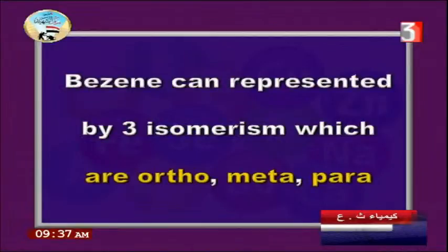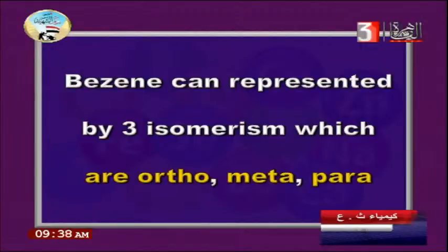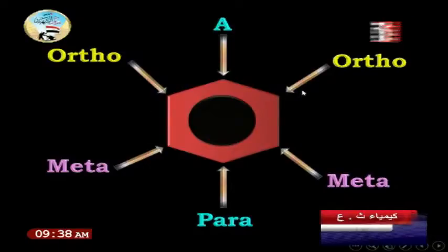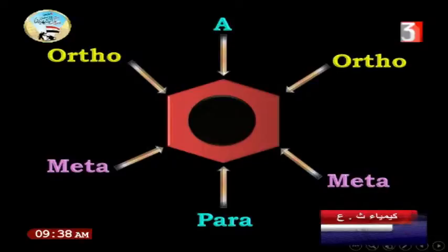Benzene can be represented by three isomers: ortho, meta, and para — different shapes. How do you differentiate between them? Looking at the benzene ring, ortho position means the two carbons on the left and right of the main substituent. Meta position is the next two carbons further out. Para position is the last one, directly opposite.